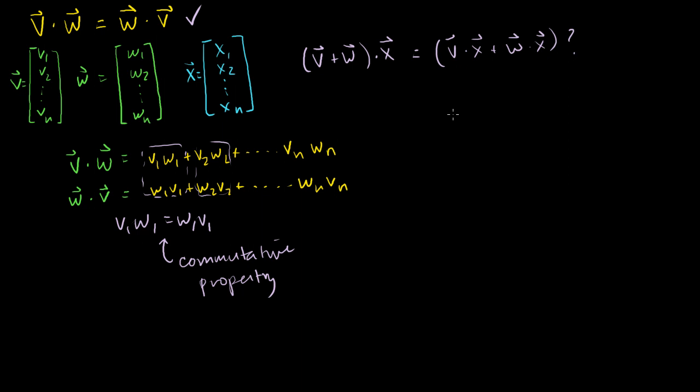So let's see if this is true for the dot product. What is v plus w? v plus w is equal to, we just add up each of their corresponding terms: v1 plus w1, v2 plus w2, all the way down to vn plus wn.